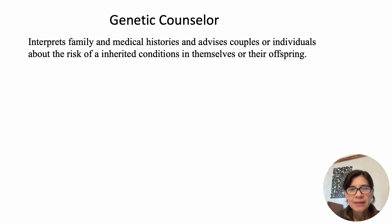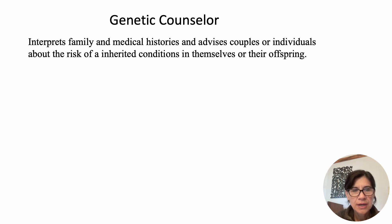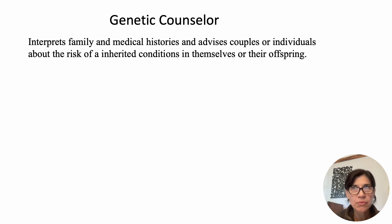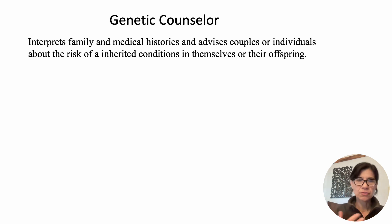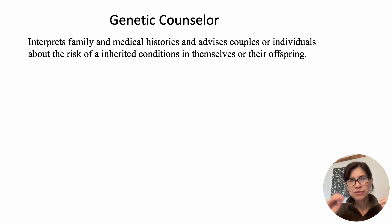Hi students, this is our last video lecture for module 4. In this video lecture I'm going to show you how you can use a tool called a pedigree to predict the chances of a couple having a child with certain disorders. It's similar to Punnett Squares in that you're predicting if a certain disorder can run in a family, but in a pedigree you're looking at the family as a whole and finding patterns of inheritance.